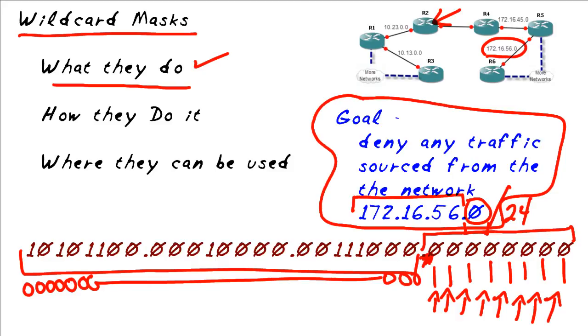Where there's a bit on, we don't care about matching. How they do it is they do a one-to-one comparison, bit for bit for bit for bit. If the wildcard bit is on, it's like a party. We don't care what the corresponding bit is. It could be anything. If the wildcard bit is set to zero, it's not wild, that bit has to match. And where can they be used? They can be used in access lists and one other place.